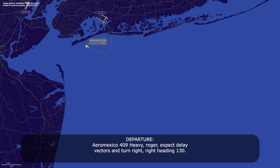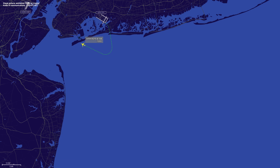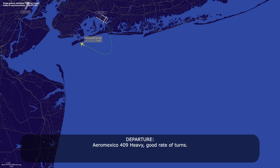Area Mexico 409 heavy, roger, expect delay vectors then turn right heading 130. Okay, delay vectors, turn right heading 130, and maintain 7000 for now, we have 200 knots. Area Mexico 409 heavy, good rate of turn.